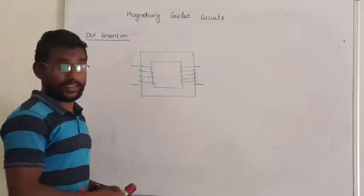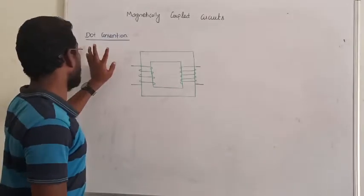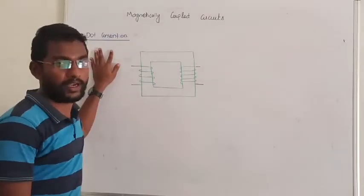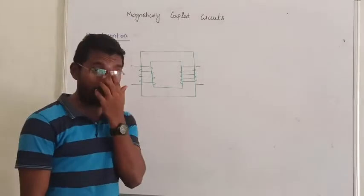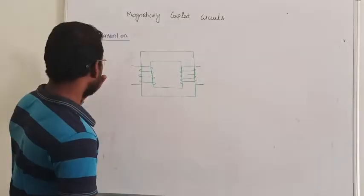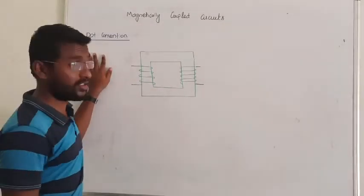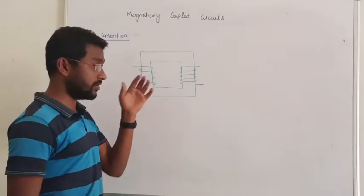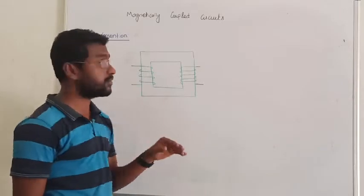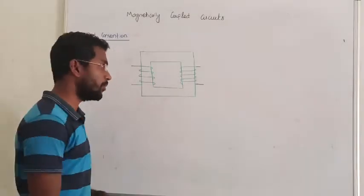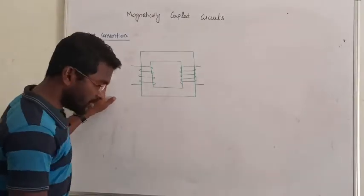Hello guys, in this lecture we are going to see a beautiful part of magnetic coupling circuits, the so-called dot convention. Without knowing the dot convention, you won't be able to solve any problems from magnetic coupling circuits. Let us see them one by one, starting with the dot convention.